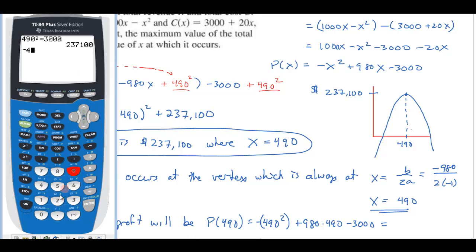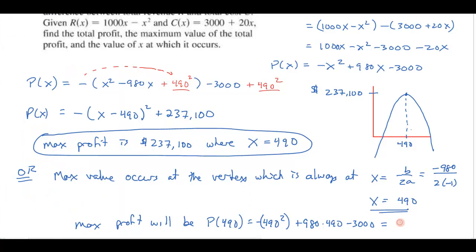So if I take -490² + 980 times 490, so that'll be the 980x minus the 3000, and that gives me, sure enough, 237,100 dollars.